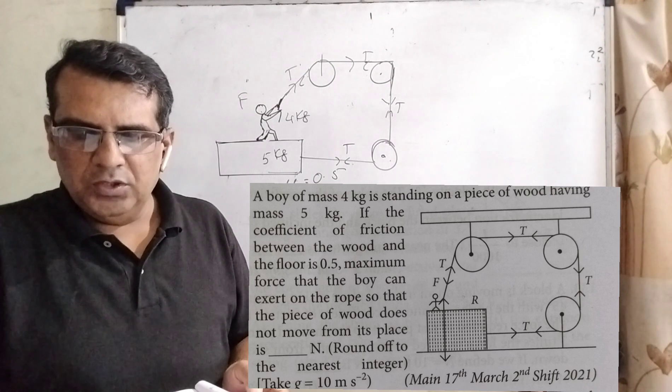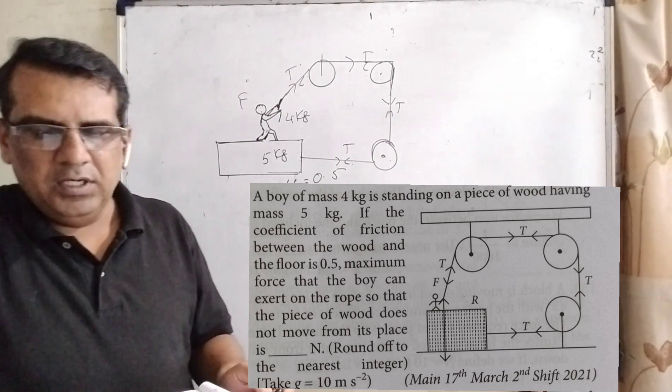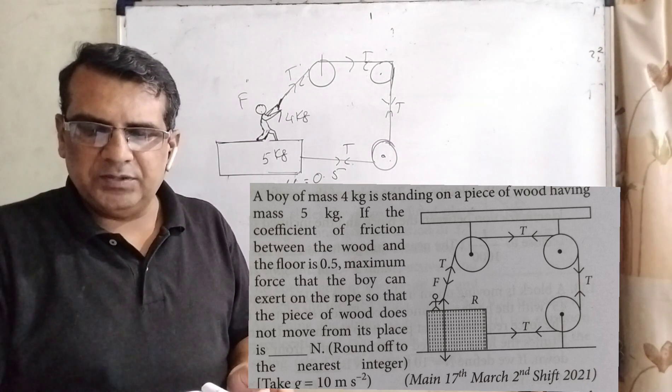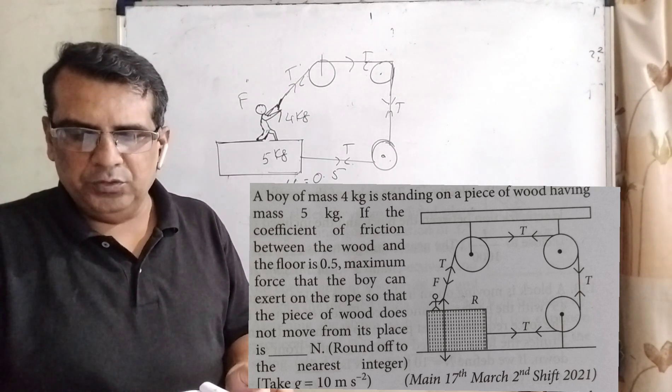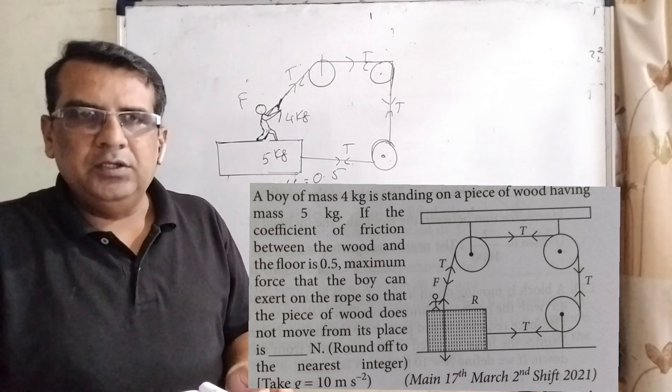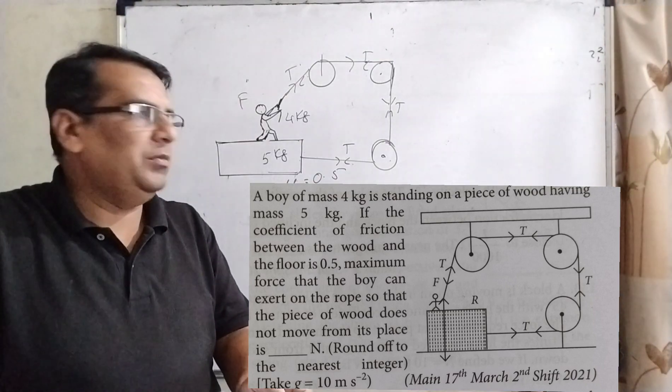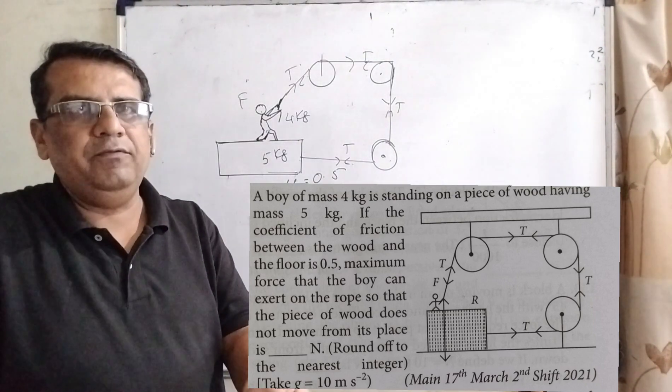on the rope so that the piece of wood does not move from its place is fill in the blanks in Newton. And g can be kept here 10 meter per second squared. Mu is given 0.5.